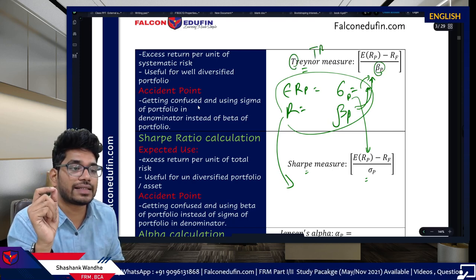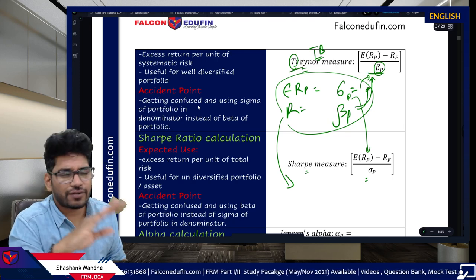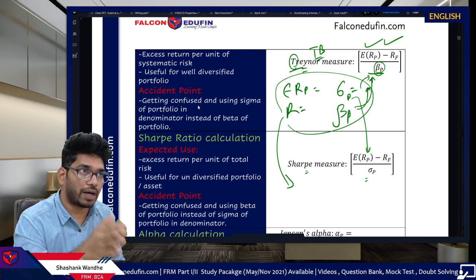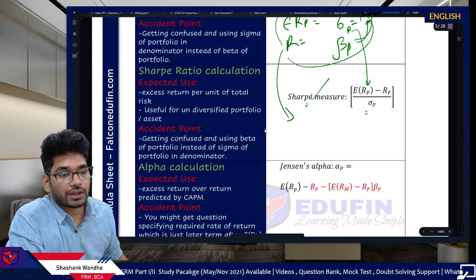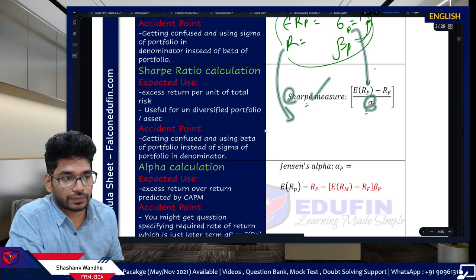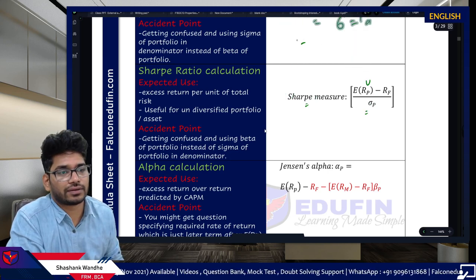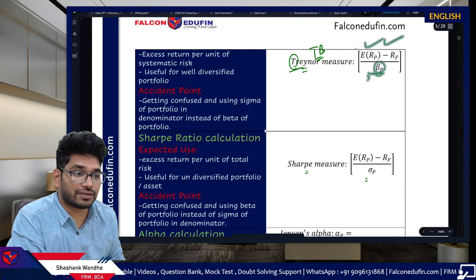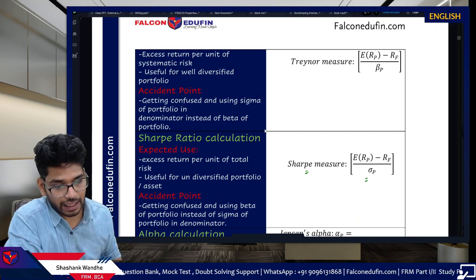To avoid confusion: remember TB — Treynor uses Beta. For Sharpe, use Sigma. An easy memory trick: TB stands for tuberculosis — Treynor, Beta. Everyone remembers the numerator (expected return of portfolio minus RF), so this TB trick resolves the only confusion area. GARP knows this is a common mistake and will set trap answer choices accordingly.